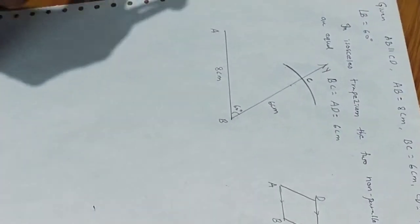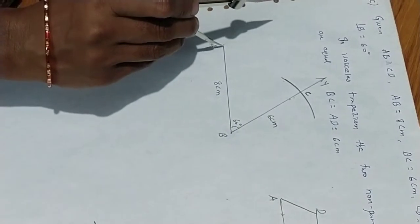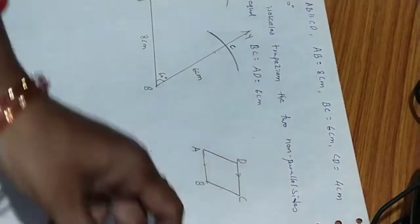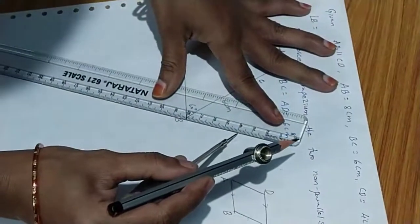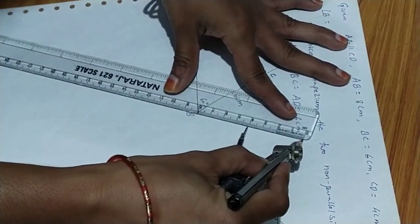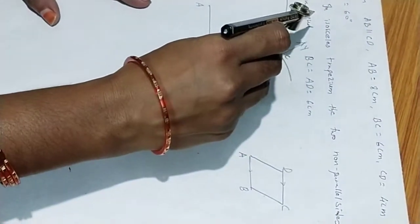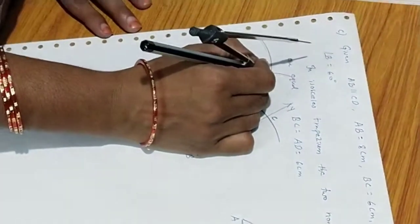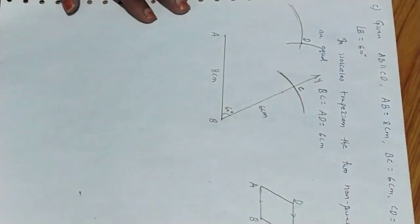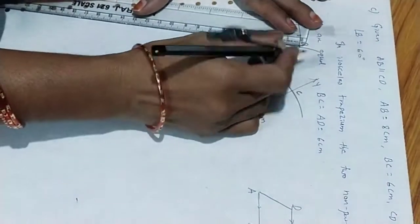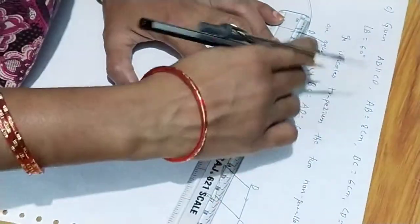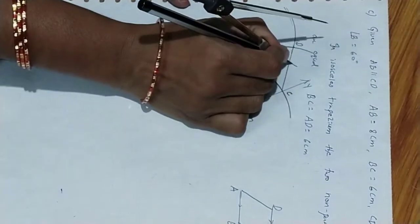Next, AD equals 6 cm. With center A, draw an arc of 6 cm. And next, CD equals 4 cm. With center C, take radius 4 cm and draw an arc. These two arcs intersect — put the point D there. Join AD and CD. So AD equals 6 cm and CD equals 4 cm.